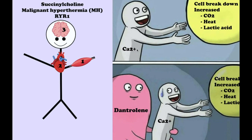ATP consumption is high as it is used to return calcium to the sarcoplasmic reticulum, resulting in increased carbon dioxide, heat, and lactate production. An early sign of this potentially life-threatening condition is contraction of the jaw muscles — trismus. Cells eventually break down, resulting in elevated myoglobin in blood and hyperkalemia. Treatment requires intravenous dantrolene, aggressive cooling using ice-cold saline to lavage the bladder and peritoneum, and correction of biochemical and hematological parameters. Dantrolene uncouples the excitation-contraction process by binding to the ryanodine receptors, thereby preventing the release of calcium from the sarcoplasmic reticulum in striated muscle.